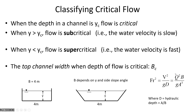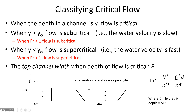To diagnose the flow regime, find the Froude number: less than 1 is subcritical, greater than 1 is supercritical. If you want to find the critical depth, set the Froude number equal to 1 and solve for y, which will appear in both the area and top width terms. We'll do that in an example. Froude number less than 1 is subcritical; greater than 1 is supercritical.